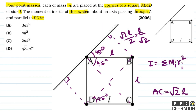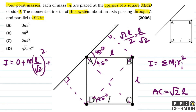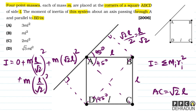तो clearly moment of inertia निकाल सकते हैं। A वाले की वजह से contribution 0 होगा। B वाले की वजह से होगा m × (L/√2)², C वाले की वजह से होगा m × (√2L)², और D वाले की वजह से होगा m × (L/√2)²।